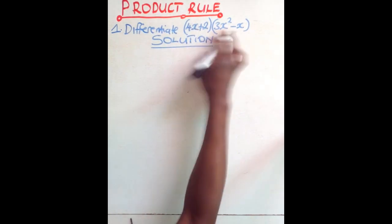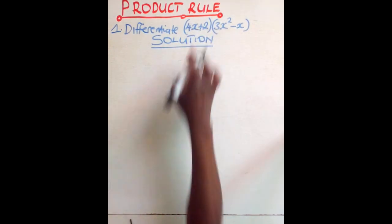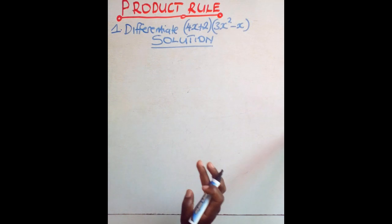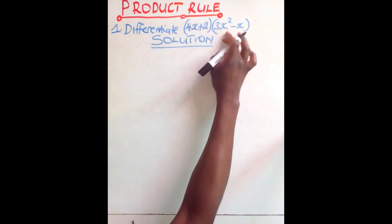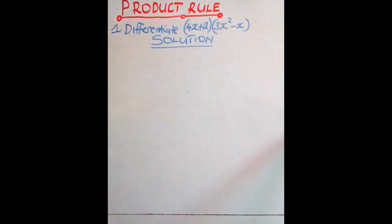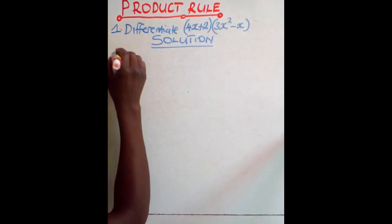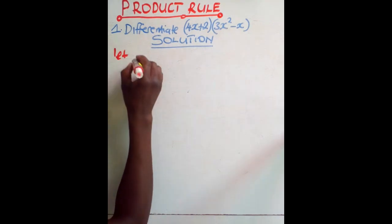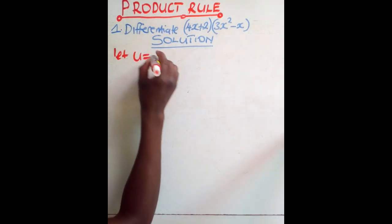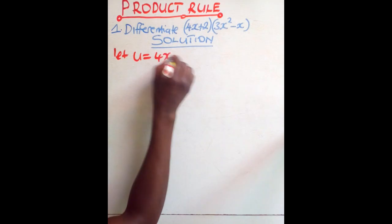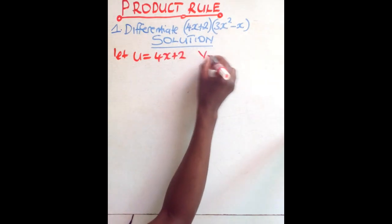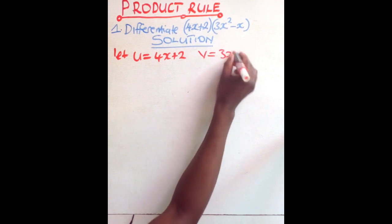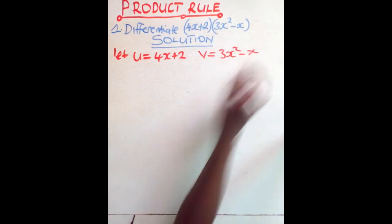The rule suits because this is a product. We have two terms that are being multiplied and they are a product. So you let this be equal to u and this be equal to v. Let u be equal to 4x plus 2 and v be equal to 3x squared minus x.